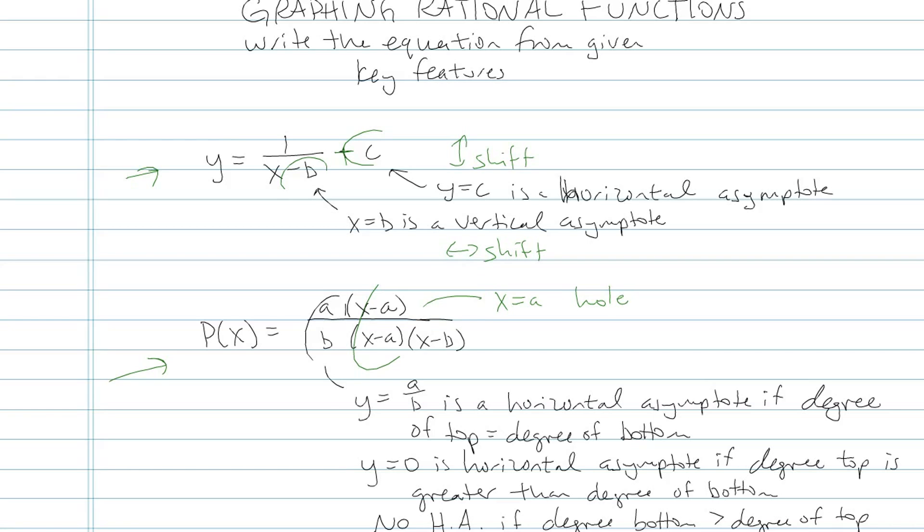Also in the bottom one, you have the leading coefficient numbers a over b. And that's important because y equals a over b is a horizontal asymptote if the degree of the top is equal to the degree of the bottom. Degree, of course, means highest exponent. And then another situation you might have for the horizontal asymptote is if y equals 0, if the degree of the top is greater than the degree of the bottom. And the last thing is that there's no horizontal asymptote if it's bottom-heavy, or the degree of the bottom is greater than the degree of the top.